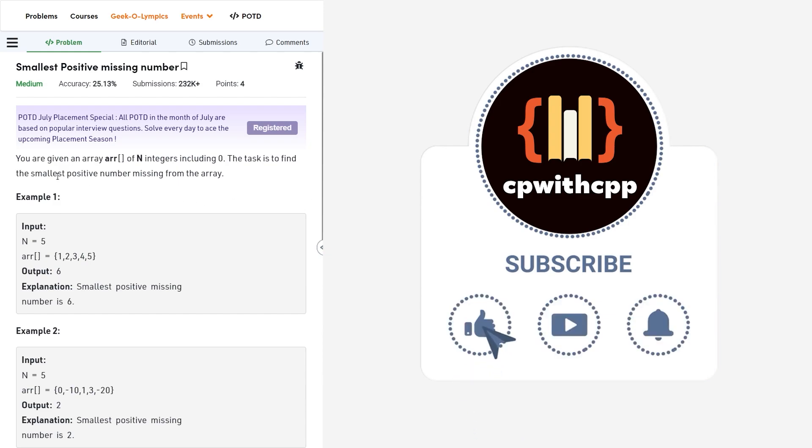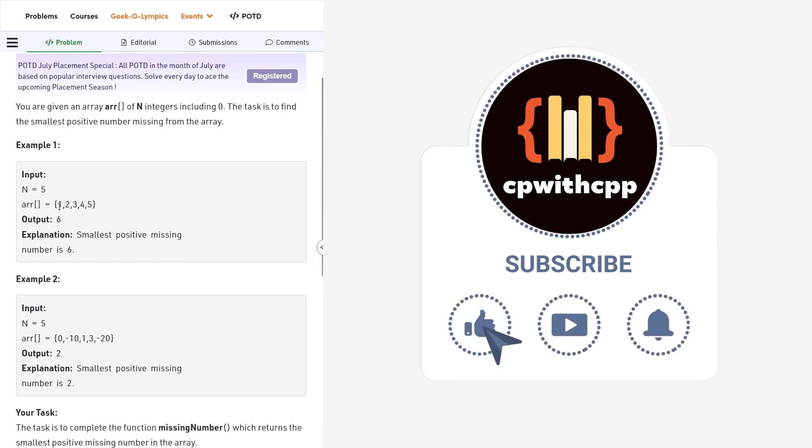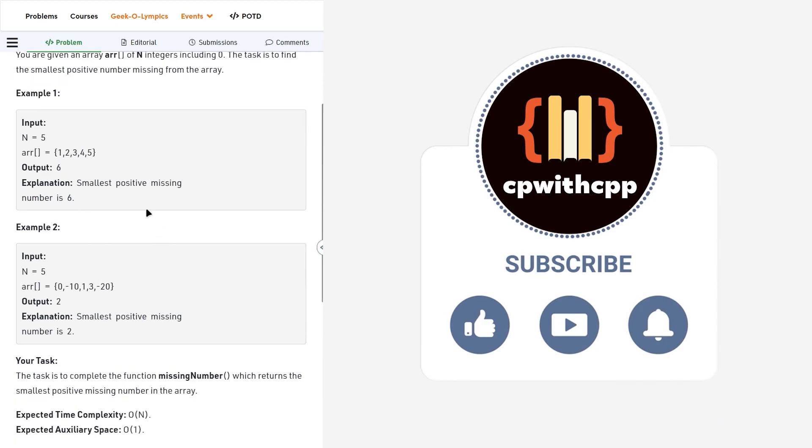This particular problem says that we have been given an array of n integers and we have to find the smallest positive number missing from the array. The array will be having all sorts of numbers negative, positive, and zero as well. We have to find the smallest missing positive number and positive means starting from 1. So we don't have to include 0 in our answer.